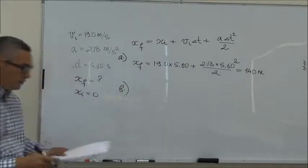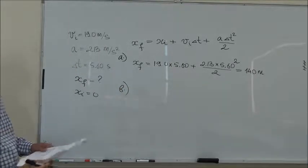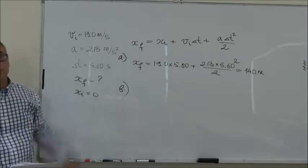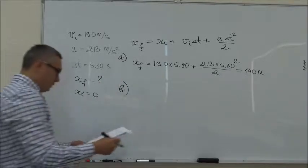In part B we need to find the final velocity of the car when it gets to this position. So what is our V final?